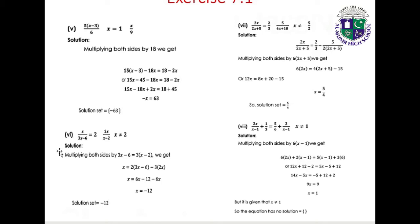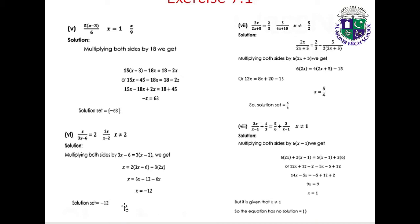Part 6: x/(3x minus 6) equals 2x/(x minus 2), where x is not equal to 2. Multiplying both sides by 3(x minus 2): x equals 2(3x minus 6) minus 3(2x), giving x equals 6x minus 12 minus 6x, so x equals minus 12. Solution set: {-12}.